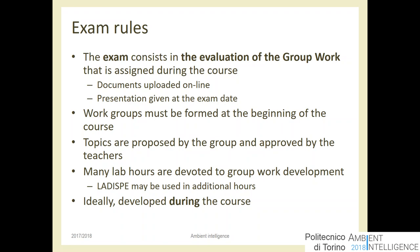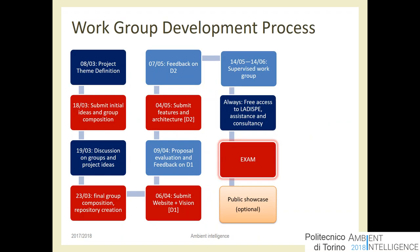Everything is about your project. The path: first, define the theme of the project — something we're working on in the next half hour. Then submit your initial idea and group composition. Groups of three or four people. After that we discuss the ideas, and there is one more week to finalize the group composition and topics. By the 23rd of March, every one of you should have the project title and group defined.